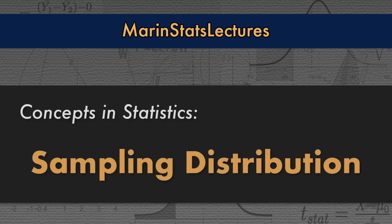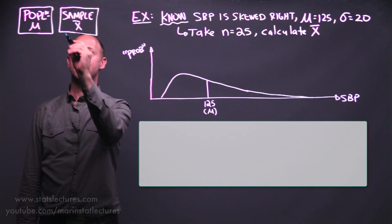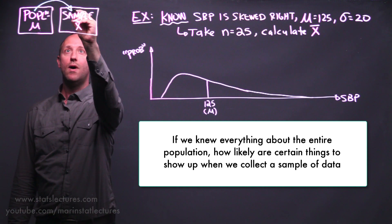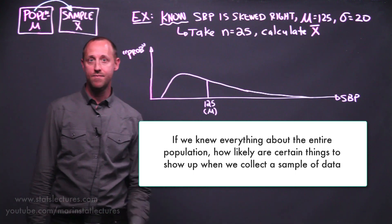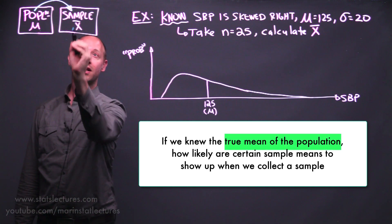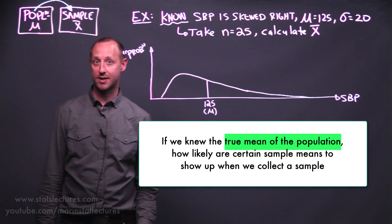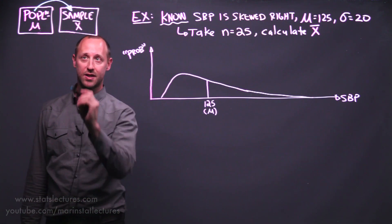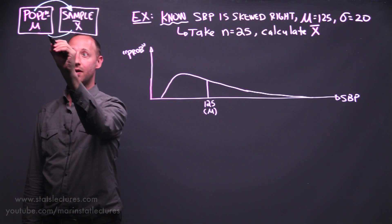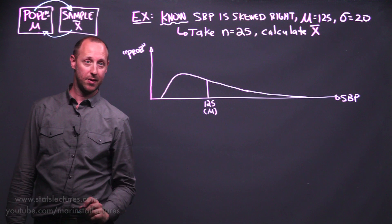In this video, we're going to build up the concept of a sampling distribution — specifically, the sampling distribution of the mean. This is going to help us understand, if we knew the truth for the entire population, how likely certain things are to show up when we collect a sample of data. Specifically, if we knew the true mean in the population, how likely certain sample means are to show up. Building this understanding is going to help us do statistical inference, where we take our sample and try to make statements about the population.